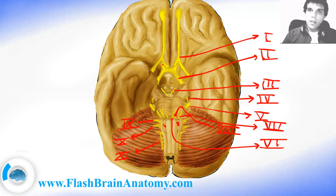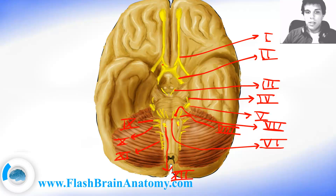The last nerve is the hypoglossal nerve, right here between the olivary bodies and the pyramids — it is nerve number twelve. It is mainly motor and provides innervation for the tongue muscles, except for the palatoglossus which is innervated by the vagus.